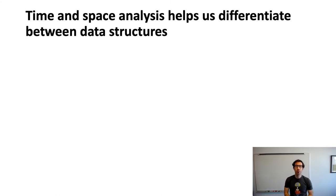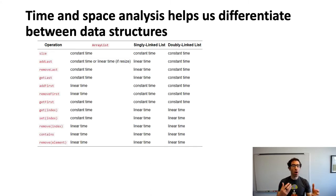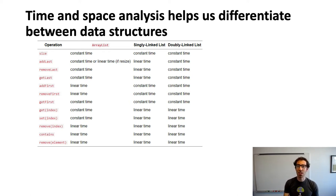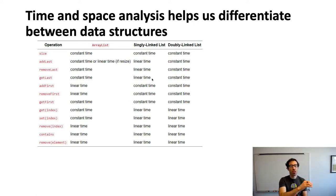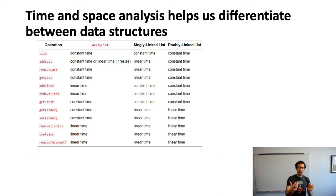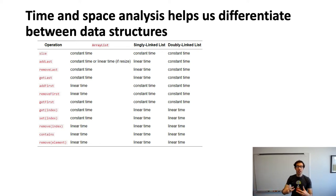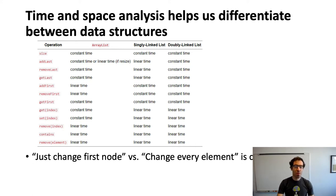Time and space analysis helps us differentiate between data structures. You may remember this table of the running time of various operations on array lists, singly linked lists, and doubly linked lists. These were either constant time — not dependent on the size of the data or number of elements — or linear time, requiring some operation like searching through the list, shifting or copying elements, that depends on the amount of data the list has.